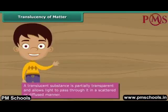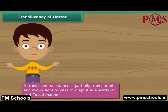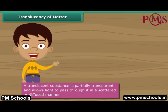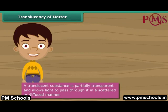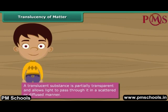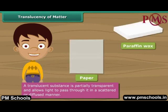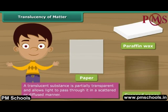A translucent substance has the characteristics of both transparent and opaque substances. While it absorbs some light, it reflects back the rest. The absorbed light is transmitted in a scattered or diffused manner. Other examples of translucent substances are paper, paraffin wax, greased paper, etc.